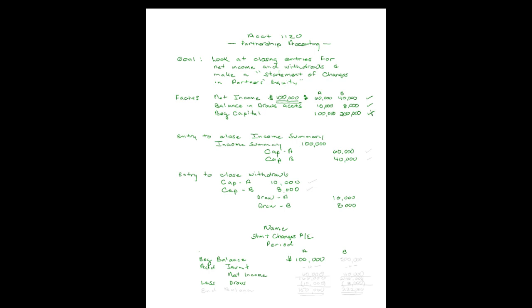For our statement of changes in partners' equity, the beginning balance for our first partner was a hundred thousand, and our second partner had two hundred thousand. Those are our beginning balances. It goes up for investments — neither of our partners made any this time — and it goes up for net income.